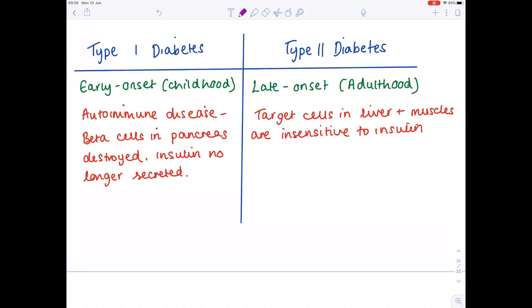In terms of treatment options if you no longer have any insulin being released from the pancreas clearly insulin injections will be needed and regular monitoring of blood glucose levels. So you often see people with the needles that prick their finger so they can measure their blood glucose levels constantly.